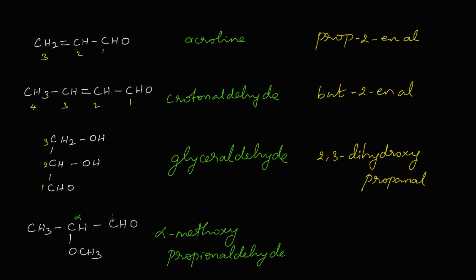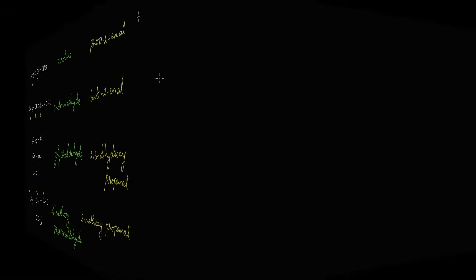For the fourth structure, counting gives three carbons, and a methoxy group is attached at the second carbon — so 2-methoxy. The straight chain is propane, and we replace 'e' with AL for the aldehyde. The IUPAC name of alpha-methoxy propane aldehyde is 2-methoxypropanol.